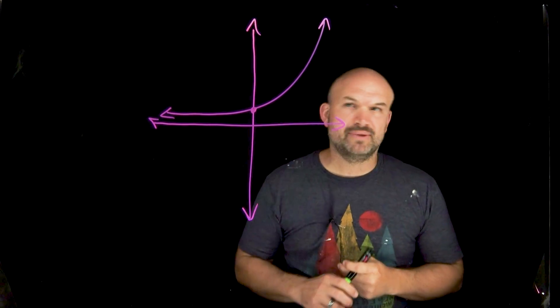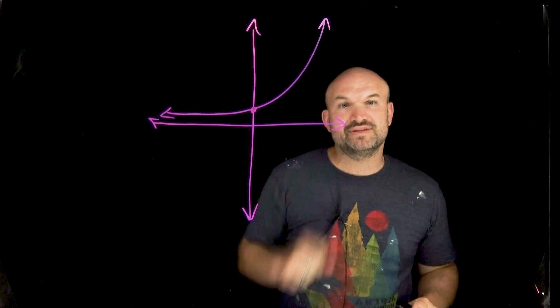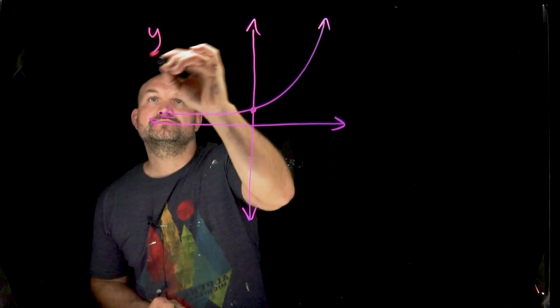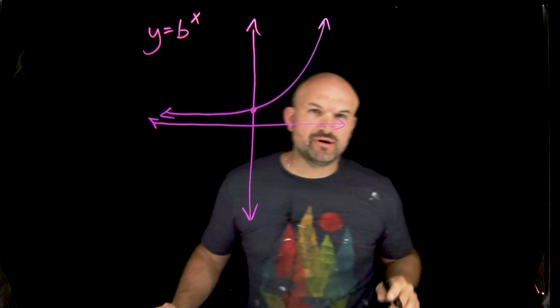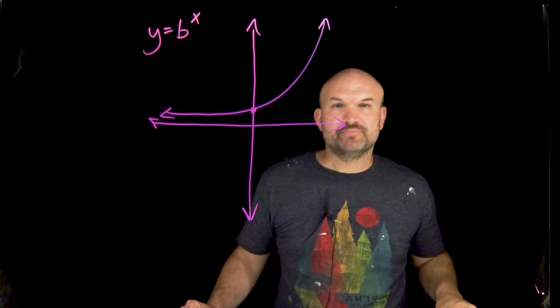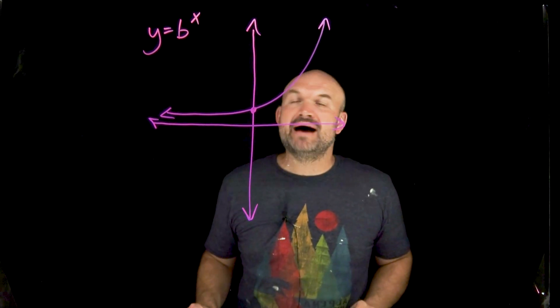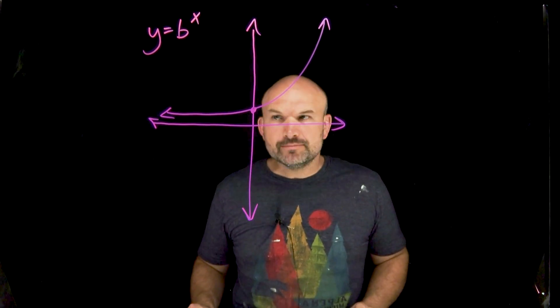Let's talk about some things that you should know about this graph. This is what we call the exponential graph, where b can represent any number that is going to be your base, and it's going to be raised to the power of x, which is going to be your input variable.